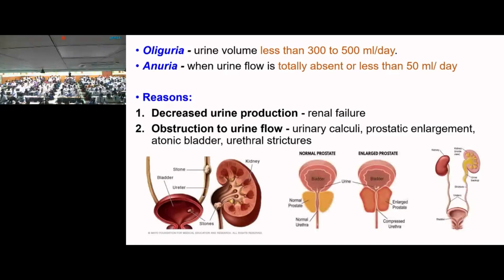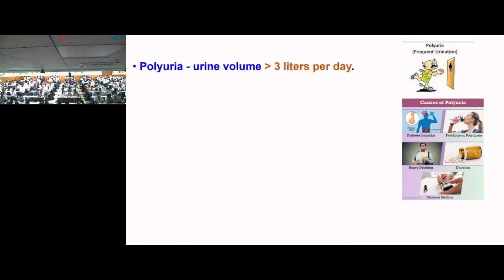This image shows a urethral calculus — a stone in the ureter — and an enlarged prostate compressing the urethra, which can obstruct urine excretion. Polyuria refers to excretion of more than 3 liters of urine per day.